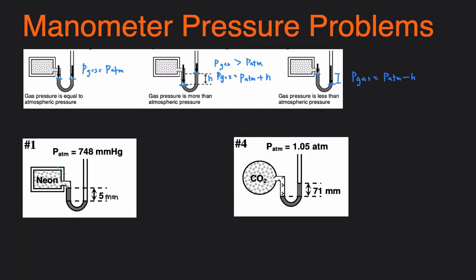Now let's take a look at a couple of examples. In the first example we're determining the pressure of neon. The line on the neon side is higher up than the line on the atmosphere side, so the atmosphere is exerting a stronger downward pressure than neon. The pressure of neon will be less than atmospheric pressure. So: pressure of neon equals 748 minus the height difference of 5, giving us 743 mmHg.